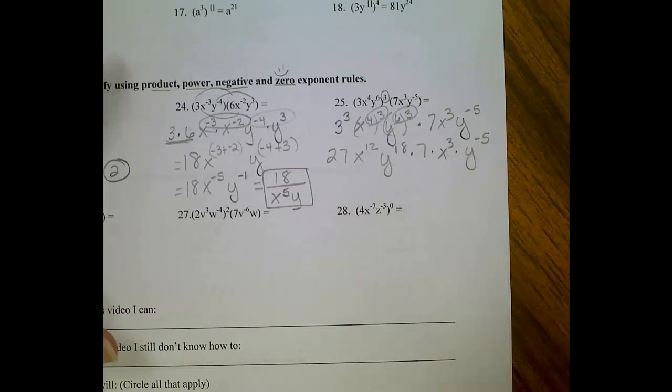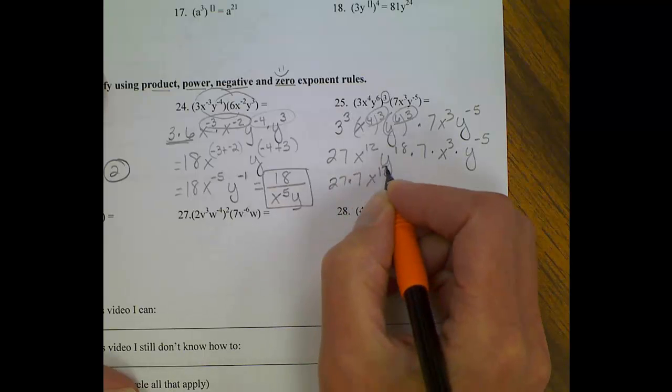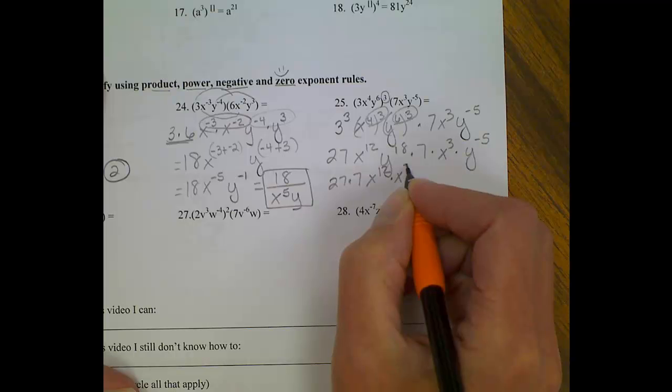Group them together. We'll have twenty-seven times seven. We'll have x to the twelfth times x to the third. We'll have y to the eighteenth times y to the negative fifth. Okay, from there, twenty-seven times seven. Putting that in your calculator real quick. You should get 189. x to the twelfth times x to the third. We're adding those exponents. We get x to the fifteenth, and we get y to the eighteenth times y to the negative five.